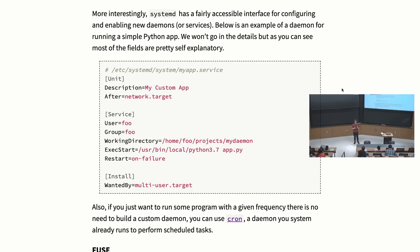A side note: if you just want to run a command periodically — say every morning — you could write a daemon that does something and sleeps for a day. But Linux and macOS already have a daemon for this called cron. Cron takes a configuration file where you can say 'run this command every day at 8am' or 'every five minutes,' and it will check for these events and execute them. Often you'll find there's already a daemon configured for what you need.